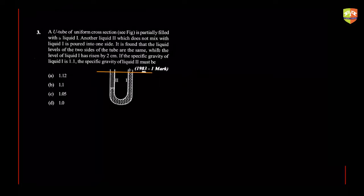So they both have to be at the same level. If they are not — let's say the right-hand side liquid is slightly more — then the pressure over here will be atmospheric pressure plus ρgh of this liquid. But that is not the case; the pressure on both sides has to be atmospheric pressure.